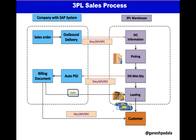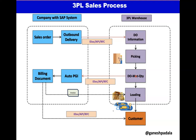The 3PL warehouse receives the outbound delivery information — material, quantity, estimated delivery date — and based on that they generate a pick slip in their system. The picker picks the goods — this is all internal to the 3PL system, no information goes to SAP at this stage. Once picking is completed and they want to ship, loading is initiated — this is the goods issue process in their system. Via API, RFC, or IDoc, the delivery number, material, and quantity are sent back to SAP, and an auto PGI is posted.